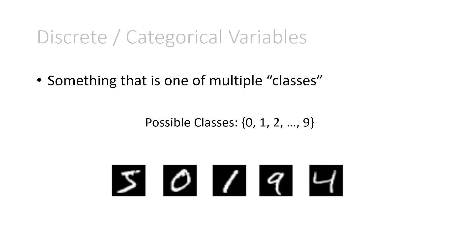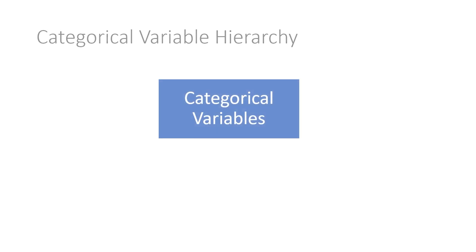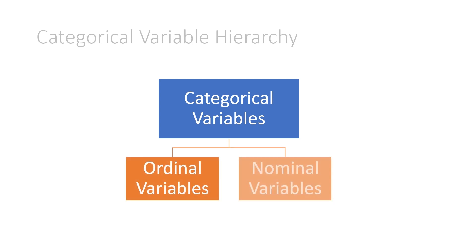It turns out that for categorical variables there is actually a small hierarchy. A categorical variable is either considered ordinal, which means there is an order, or nominal, which means there is not an order. So what do we mean by order?